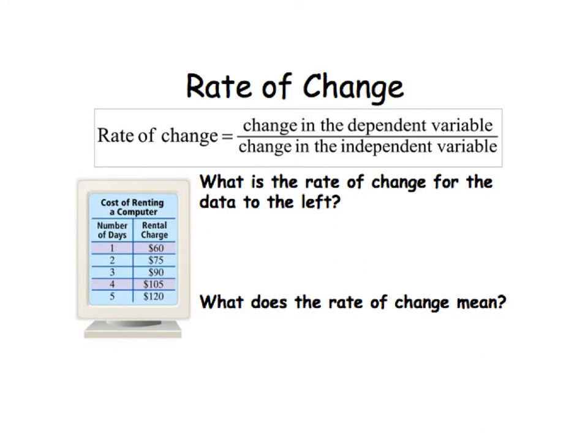And another way to think about slope is to think about it as rate of change. So in a real-world example, we can think of the rate of change as the change in the dependent variable over the change in the independent variable. And we write it as a ratio or a fraction, and we simplify it.